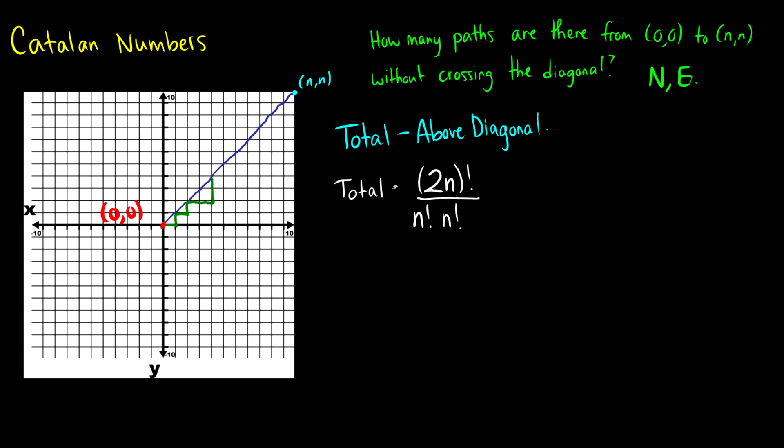So let's just write out what we have so far. We have E, N, E, N, E, E, N, N. So what do we see here that's interesting? Well, let's try a path that doesn't work. Let's try going north, north, east, north, east, east. Okay, so we have north, north, east, north, east, east.